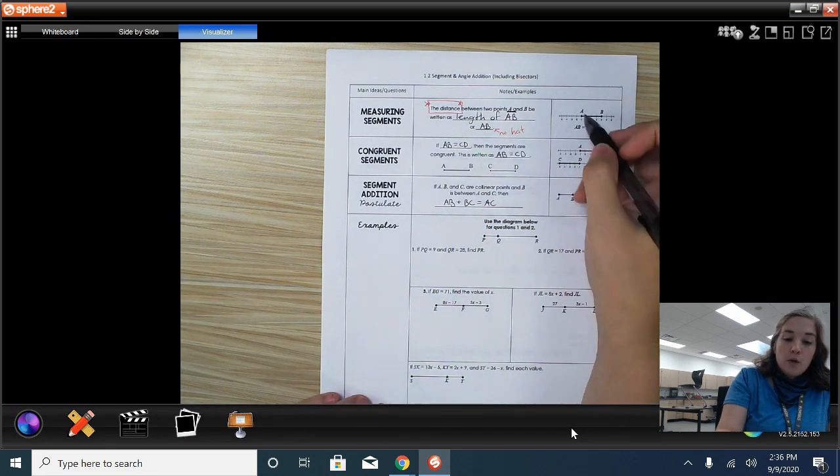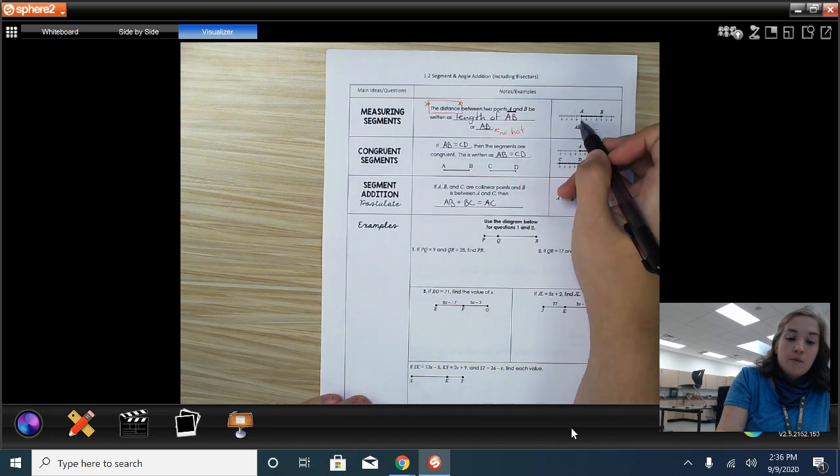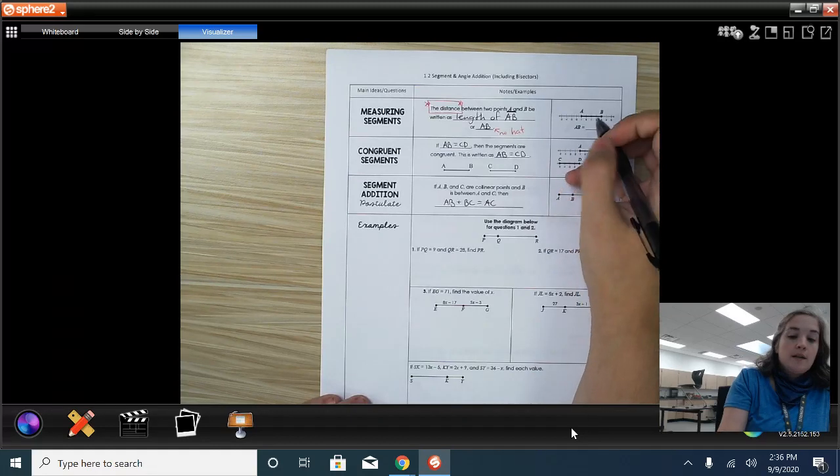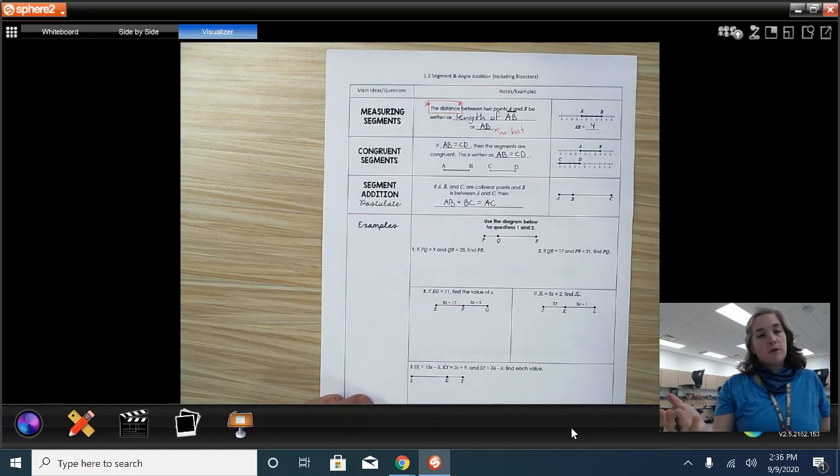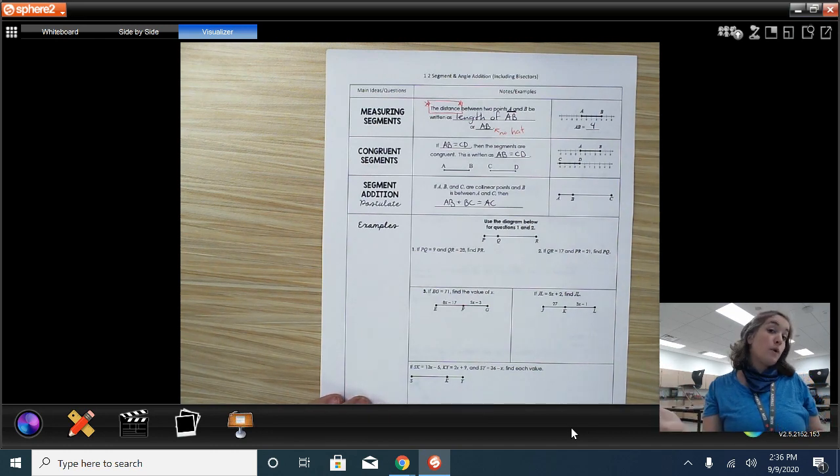In our little picture here, we've got A at negative 1 and B at 3. So, I can count over, and it is 4 units long. I know you guys have been measuring for a really long time. I'm not going to spend too much on it. It's also known as the ruler postulate, in case you're curious.